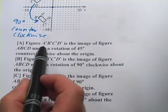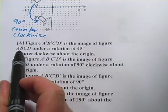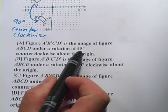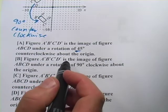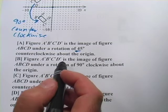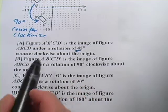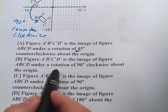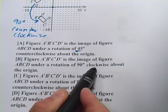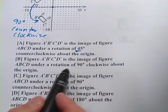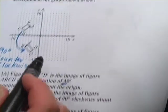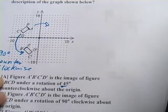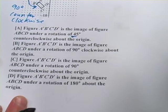So A says figure A', B', C', D' is the image of figure A, B, C, D under a rotation of 45 degrees. 45 degrees would only be half of a quadrant. So that's probably not going to be the right thing. B says A', B', C', D' is the image of the figure A, B, C, D under a rotation of 90 degrees clockwise. Well, clockwise would be the other direction. It would have ended up in the first quadrant if we were going clockwise and it's not there.